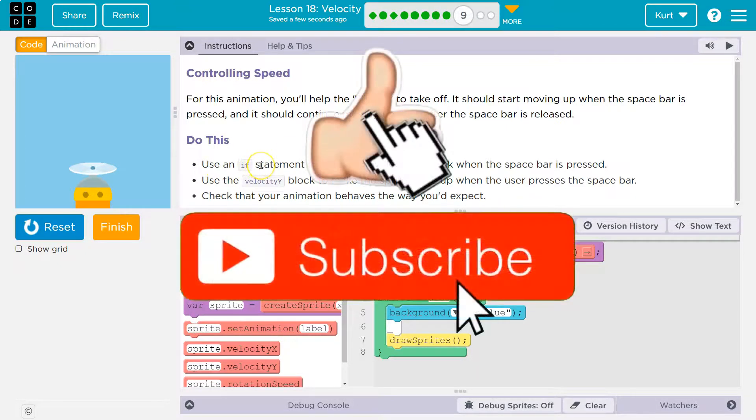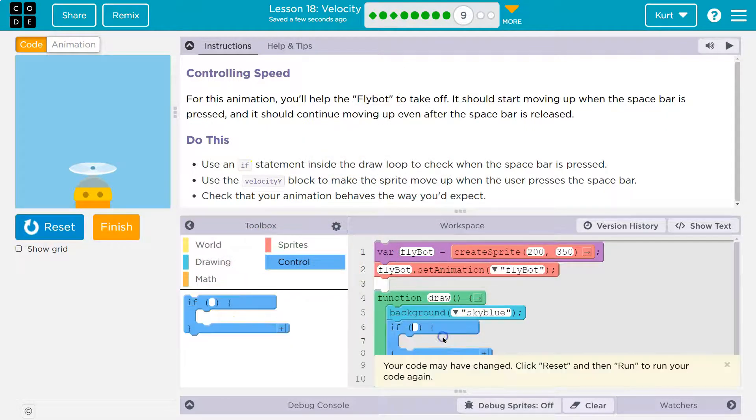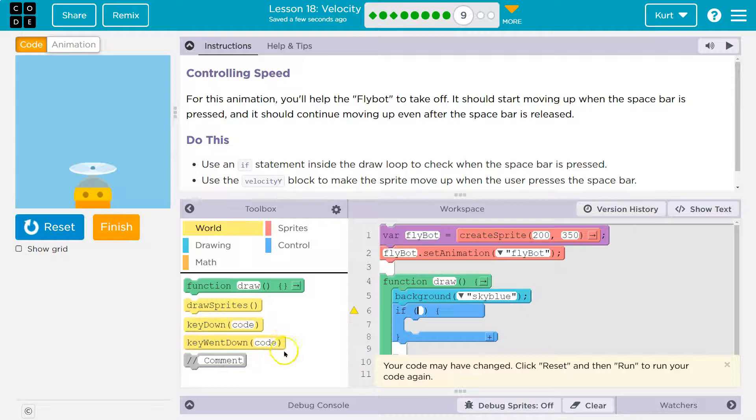Do this: use an if statement inside the draw loop to check when the spacebar is pressed. All right, so I'm headed into control and grabbing our friend the if statement, and I want to check when it's pressed. All right, so let's go to world, and I'm asking a question.